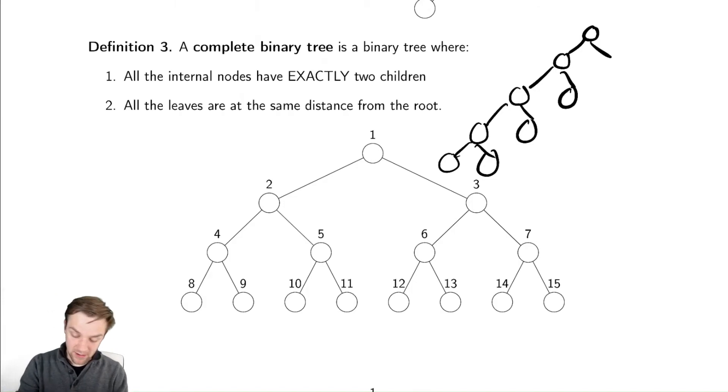And looking at this, this tree is definitely not complete. It is missing many, many nodes. We would hope that this entire part of the tree down there would be complete, but it is not. So this definition is not sufficient on its own.